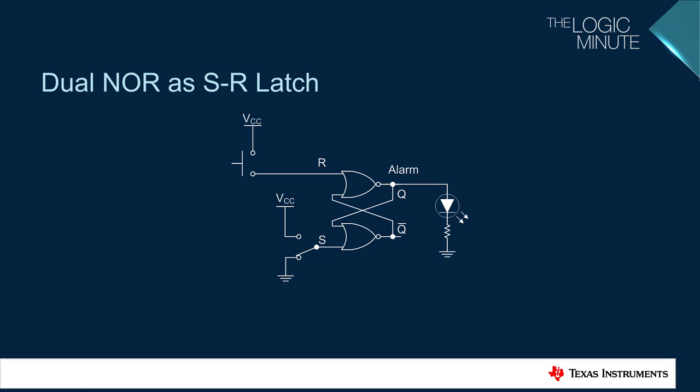A button was used to simplify the circuit, but it can be replaced with the MCU connecting a GPIO to the R input. When the set input goes high, the Q output is high, turning on the LED. The LED stays on when the S input goes low.